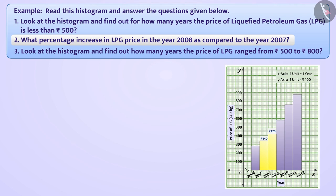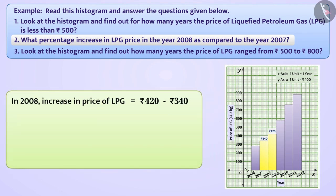In this way, the price of LPG increased from rupees 420 minus rupees 340 is equal to rupees 80 from the year 2007 to 2008. This increase has been made at 340 rupees. So, we will consider 340 as the base. In this way, the price of LPG has increased by 23.53%.